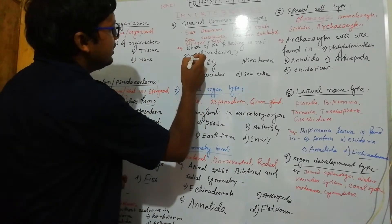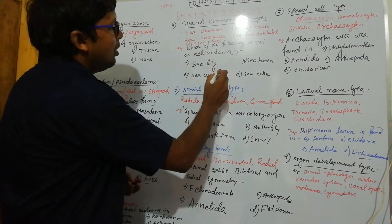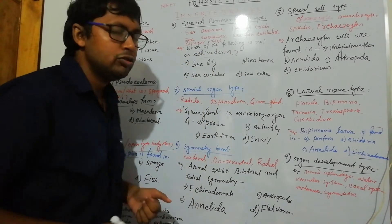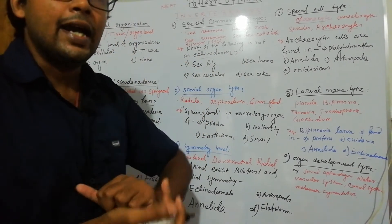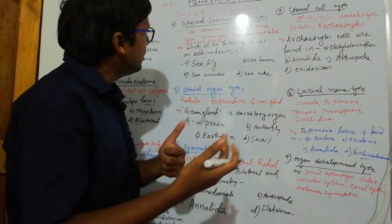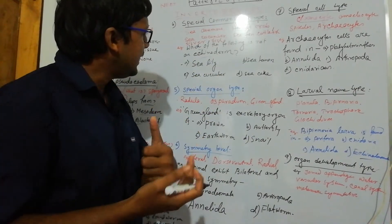For example: which of the following is not an echinoderm? What is not included in echinoderms? This is the kind of MCQ framed from the common name pattern — very important.